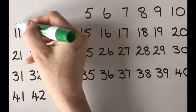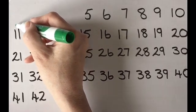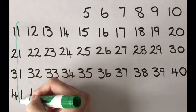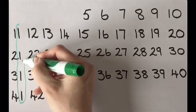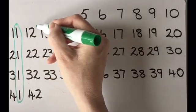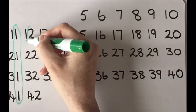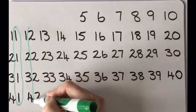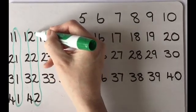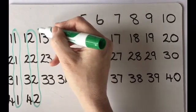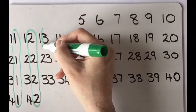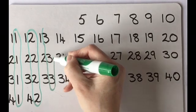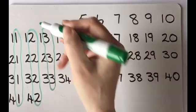They also noticed that the numbers in the first column ended in one, the second column in two, and so on for each column. Why was this? According to one of my learners, 'Big numbers are just like counting from 1 to 10 — you just start over again at 1. So when you get to 20, the next number is 21, and when you get to 30, the next number is 31. It's the same pattern.'